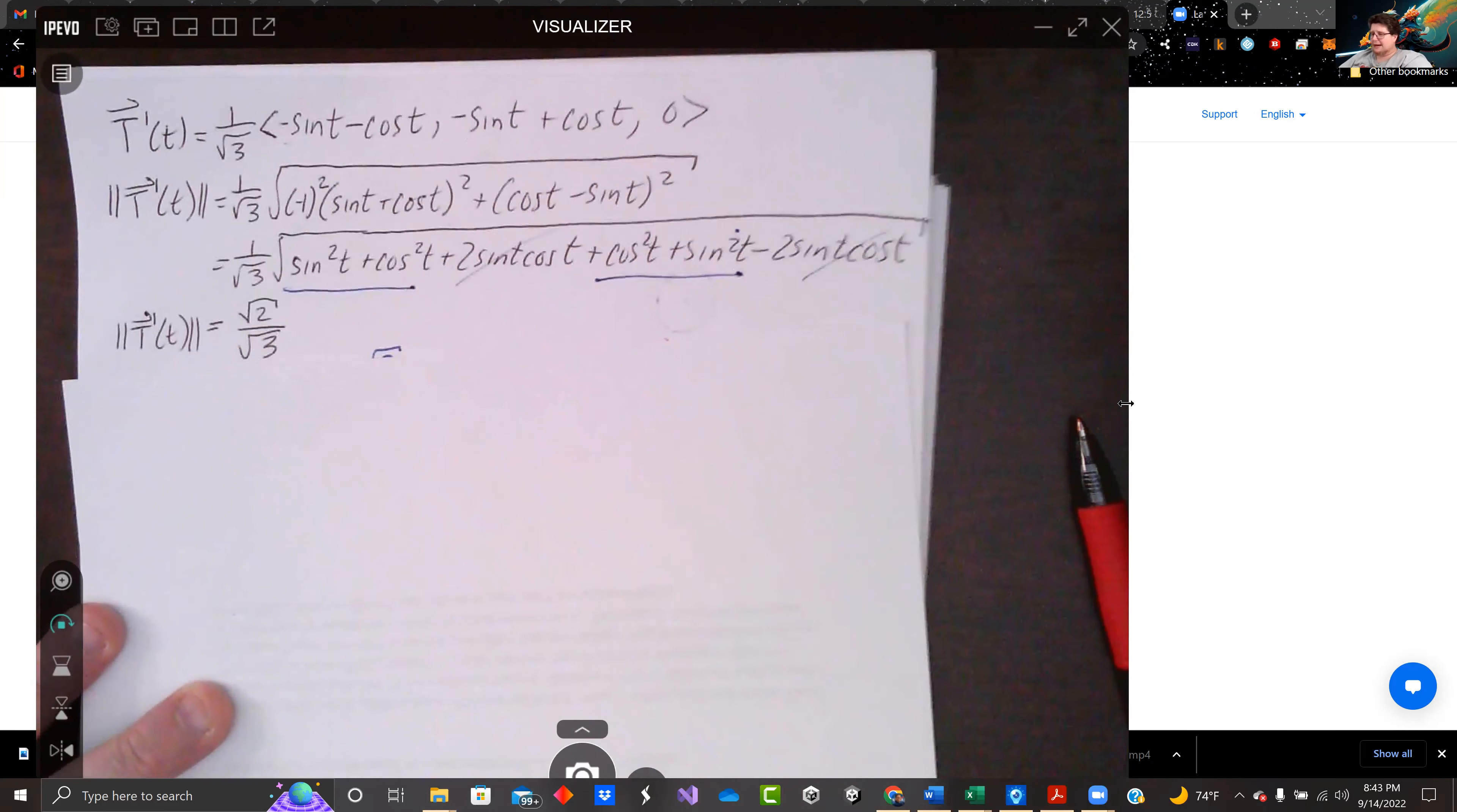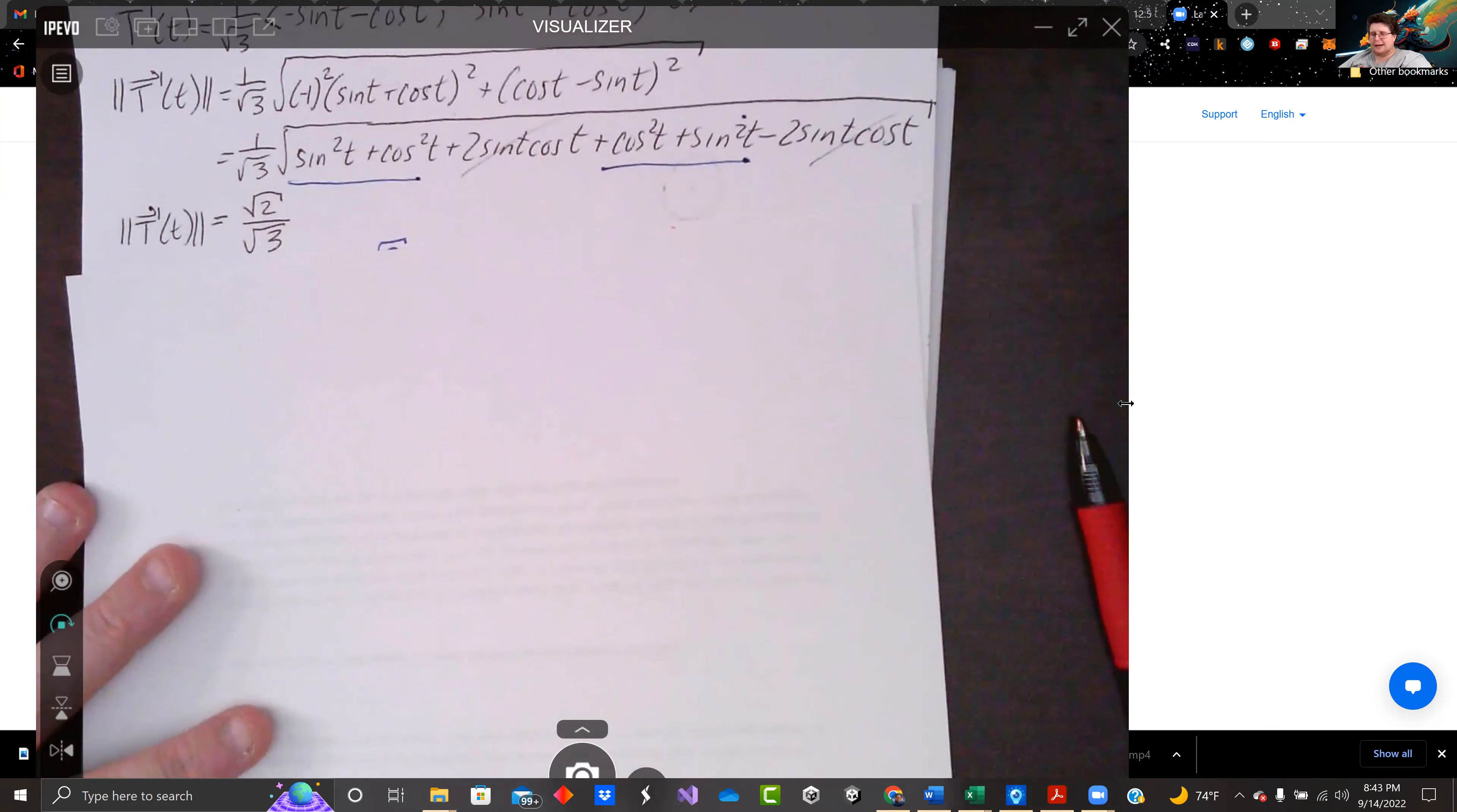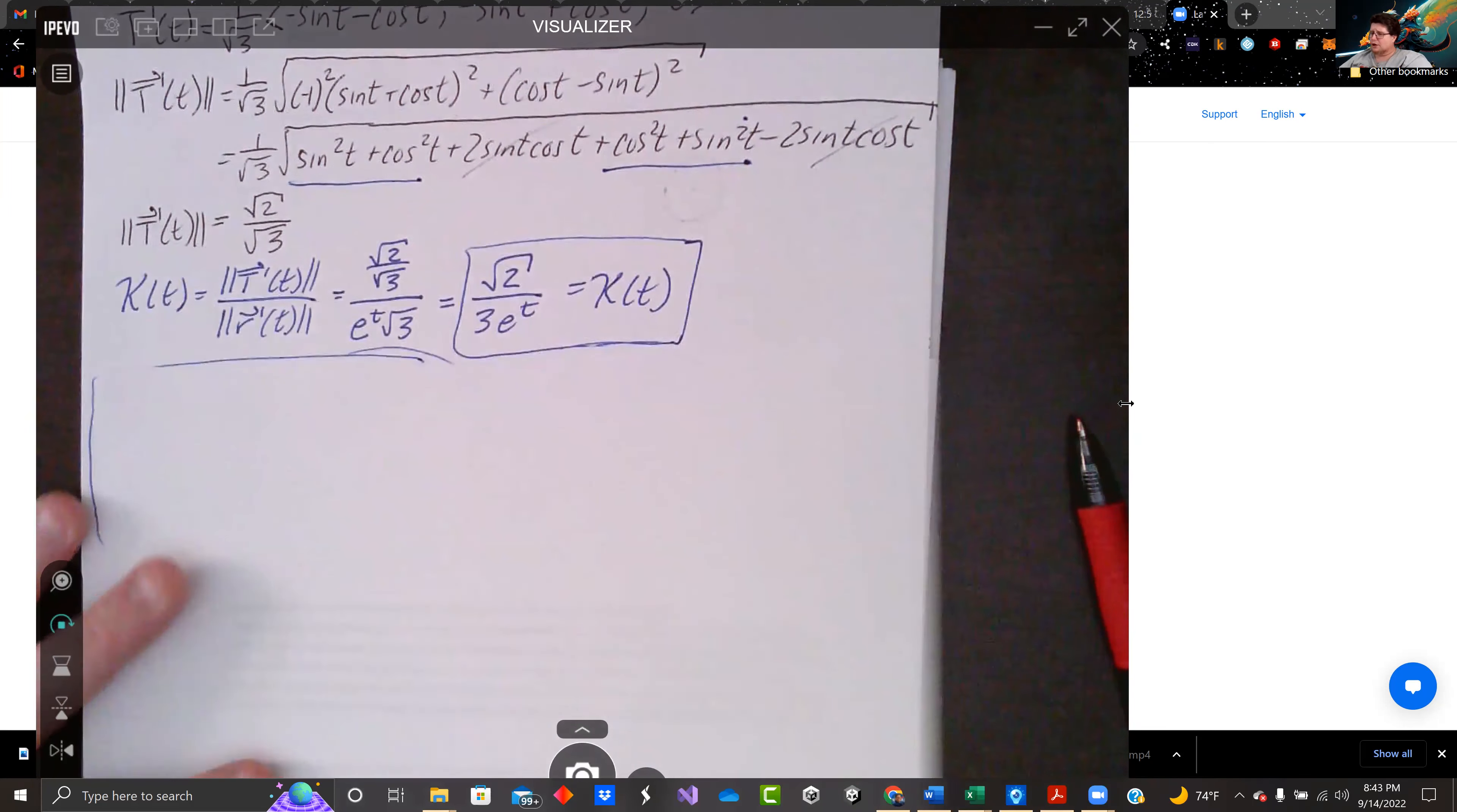Now, remember, kappa is t prime over magnitude. I'm sorry, magnitude of t prime over magnitude of r prime. So let's plug that in. Square root of two over square root of three divided by e to the t root three. Just gives us kappa as a function of time is the square root of two over three e to the t.